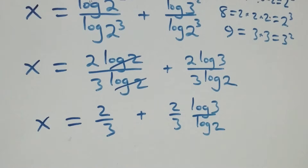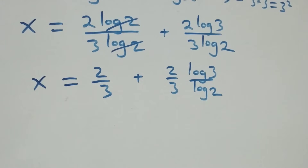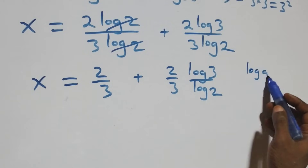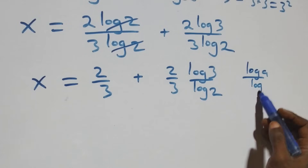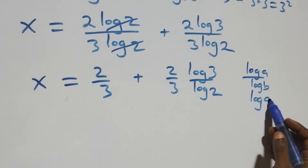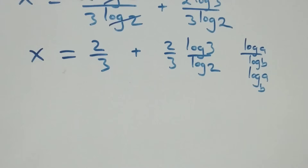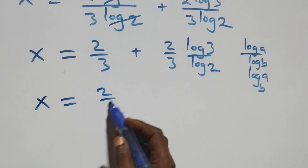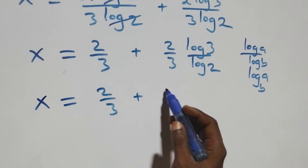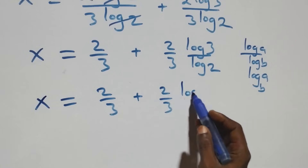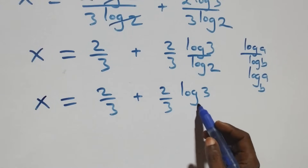Applying the change of base formula, where log a over log b is the same as log a to base b, we get x equals to 2 over 3 plus 2 over 3 times log 3 base 2.